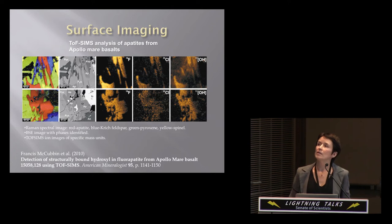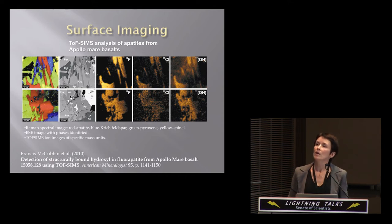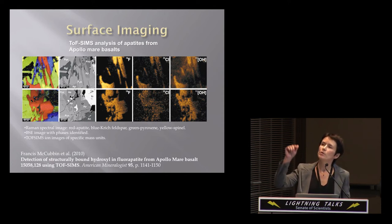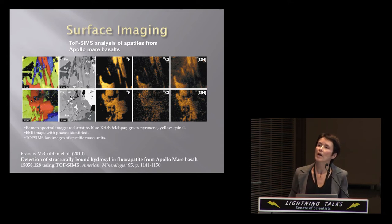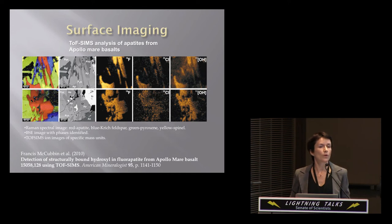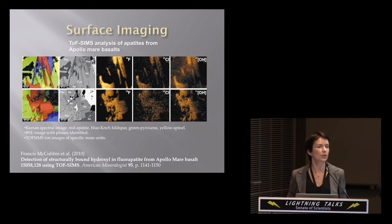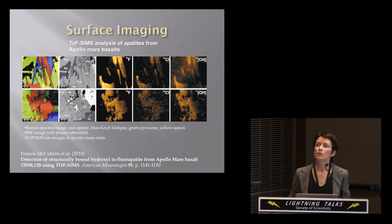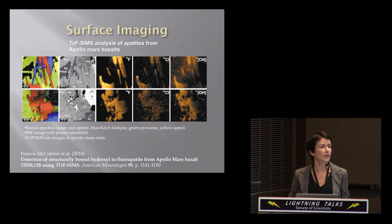Another example is TOF-SIMS analysis of apatites from Apollo Mare basalts. These are ion images of two sample grains. On the very left are Raman spectra; in red are fluor-apatites. There is also a backscattered electron image with apatite labeled as AP. The TOF-SIMS images show fluorine clearly associated with apatites, traces of chlorine in fluor-apatites, and hydroxyl ion also clearly associated with apatites. This is very good evidence of actual water in the interior of the Moon, as apatites are magmatic minerals in those rocks.